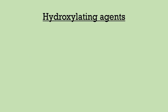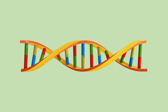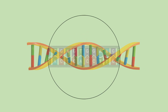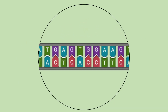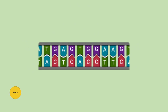Hydroxylating agents are substances which add a hydroxyl group to the bases — for example, hydroxylamine (NH₂OH). It adds a hydroxyl group to cytosine. Hydroxylamine reacts with cytosine to form hydroxylaminocytosine.